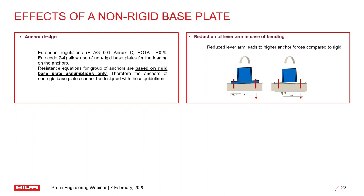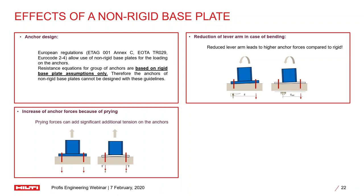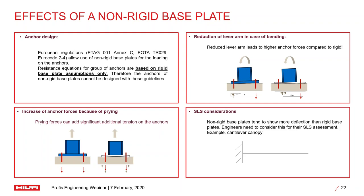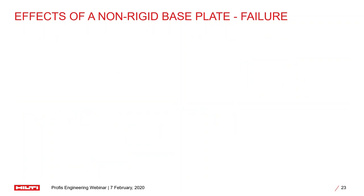In case of bending, the neutral axis might change — a change in neutral axis changes the lever arm, and a change in lever arm can lead to increased forces on anchors. Under tension load, if the plate is not completely rigid, additional compression stresses develop at the corners, increasing the prying force on anchors. A non-rigid plate can also cause additional deflection or deformation, ultimately leading to failure.